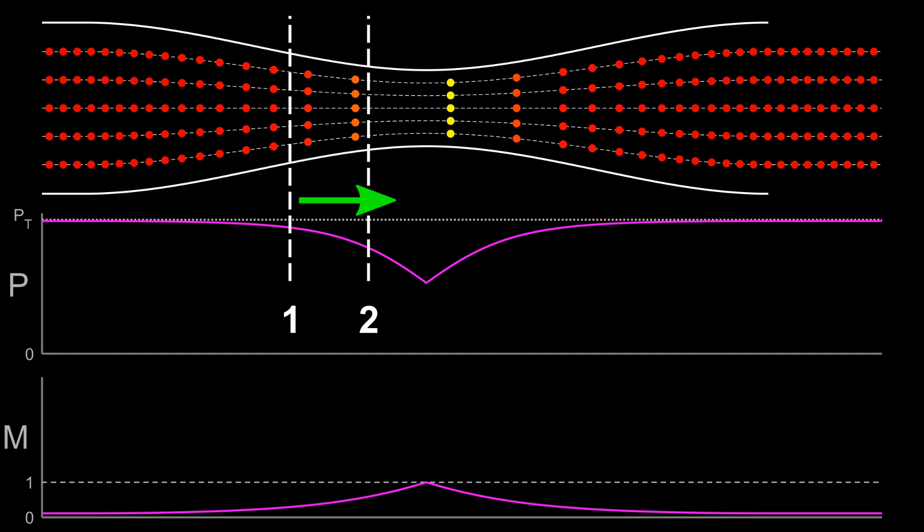Now if we look at the downstream side, we can see the reverse effect happening. The pressure at point 4 is higher than at point 3, creating a net force which is slowing down the slice of gas. This pressure gradient is why subsonic nozzles are subsonic.